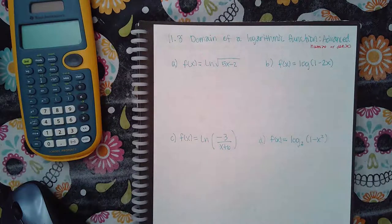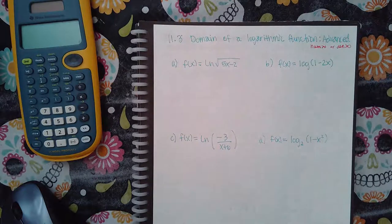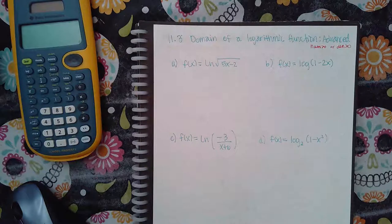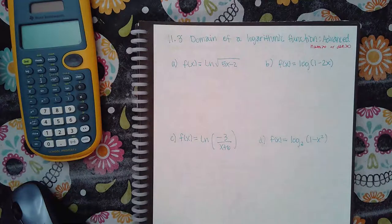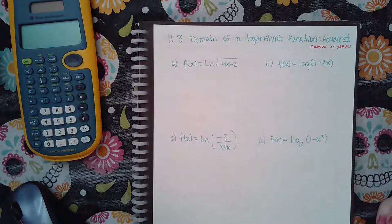This is 11.3: domain of a logarithmic function, advanced. If you notice, your argument shifts it left or right, which shifts your vertical asymptote. Then it's just a matter of whether you're to the left or to the right of the vertical asymptote, and that all depends on your argument.